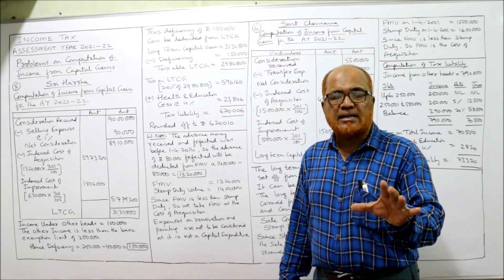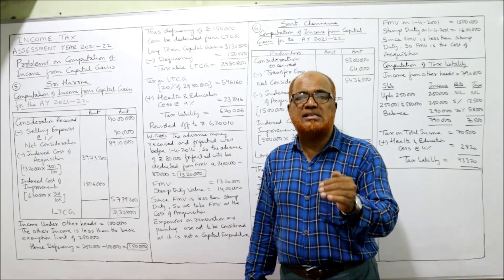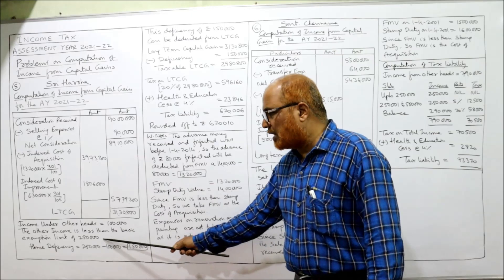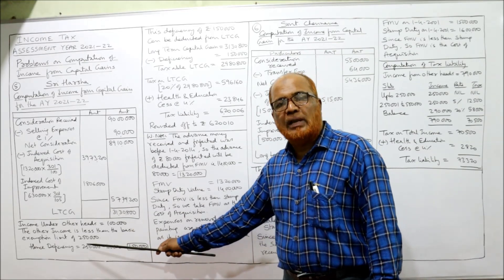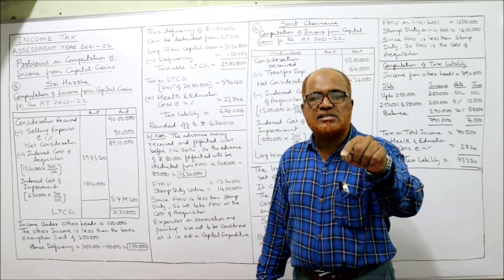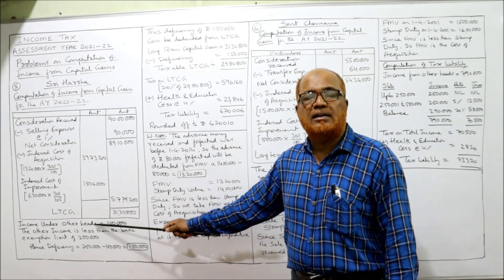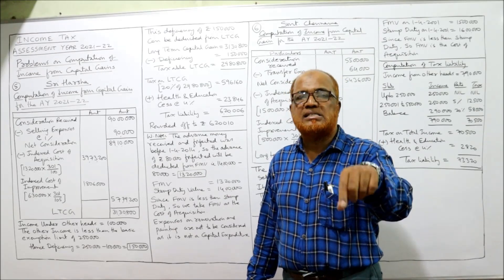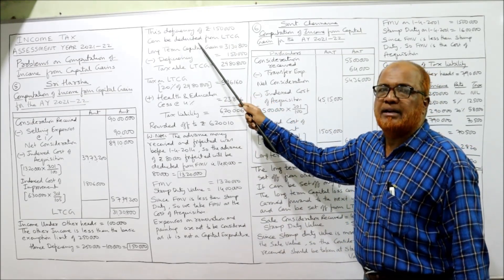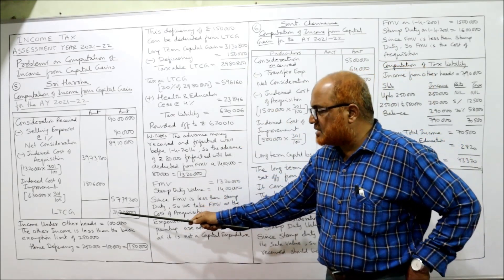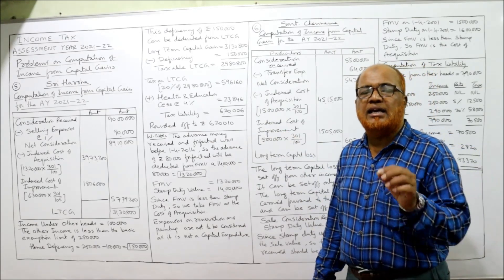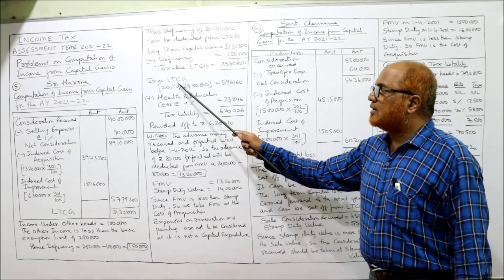The Income Tax Act says: if other income is less than the basic exemption limit, then we calculate the deficiency. The basic exemption limit is Rs. 2,50,000 whereas income is only Rs. 1 lakh. Rs. 2,50,000 minus Rs. 1,00,000 gives a deficiency of Rs. 1,50,000. This deficiency can be deducted from the LTCG. So Rs. 31,30,800 minus Rs. 1,50,000 = Rs. 29,80,800 is the taxable LTCG.